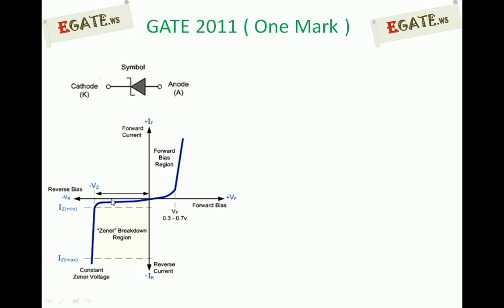Under reverse bias, as negative voltage is applied, the Zener diode behaves exactly like an ordinary diode — the current flowing through it is negligible and it acts as an open circuit under ideal conditions. Practically, it maintains a small reverse saturation current in the nano-ampere range for silicon, and the entire voltage drops across the diode until the breakdown voltage is reached.